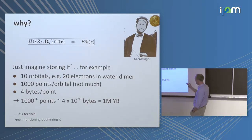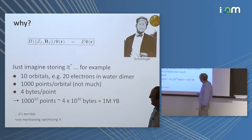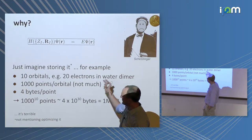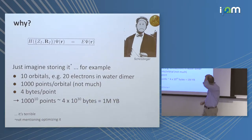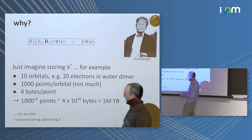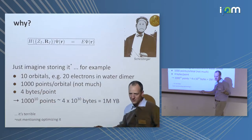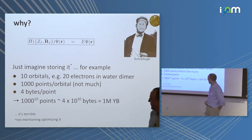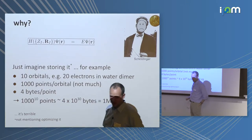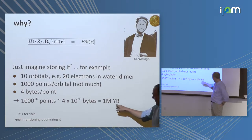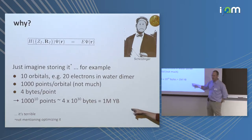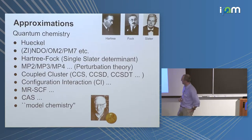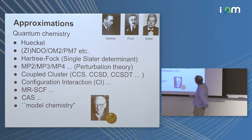Consider just storing the wave function. Take water — 10 electrons. Imagine two water molecules: 20 electrons distributed over 10 orbitals. If in X, Y, and Z you take 10 points — a very coarse grid — and store four bytes per point, you have 1000 to the 10th points, which is 1 million Yottabytes. Yotta is 10 to the 24 — that's the problem. So we have approximations, and quantum chemistry has many with famous names: Hartree-Fock and Slater, Hückel, the coupled cluster series. These are built on Hartree-Fock.